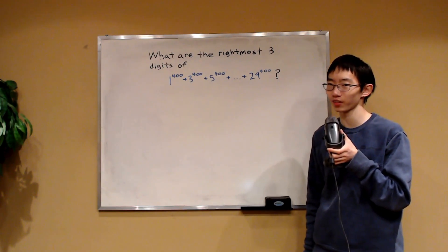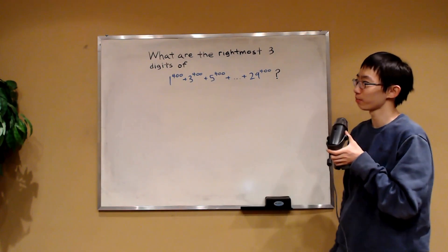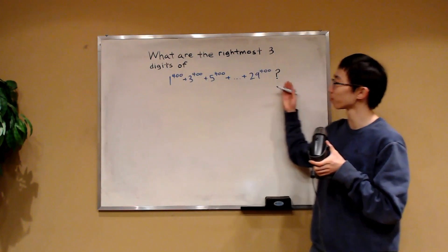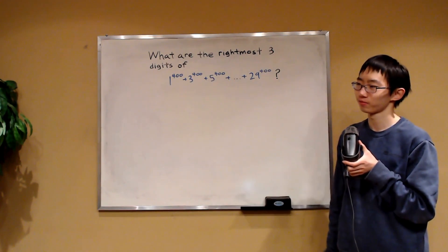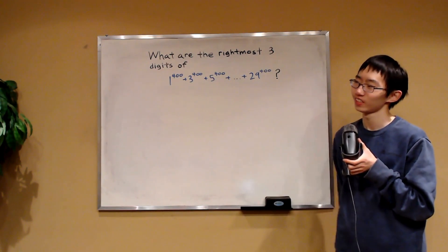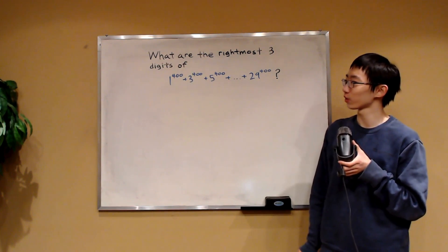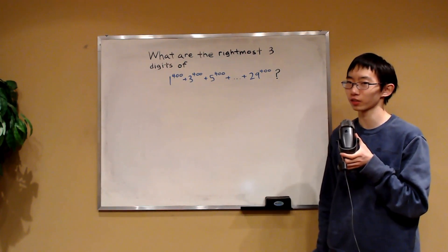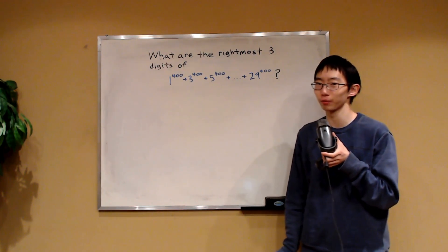Behind me is a pretty short number theory problem. I'm asking for the rightmost three digits of this number. How do we do this? Looks pretty sweet and short. However, the first step might not be immediately obvious, especially if you're not very familiar with number theory.